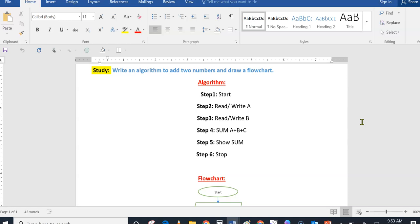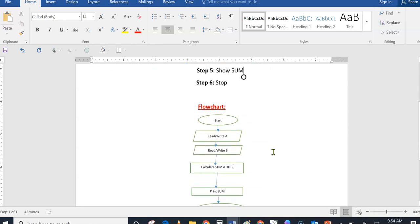Step three, I need to write or read another addend, B. Step four, I need to do the sum - sum A plus B. Then I have to show the sum. Step six is to stop. When I need to stop, I should represent it with an oval symbol again.